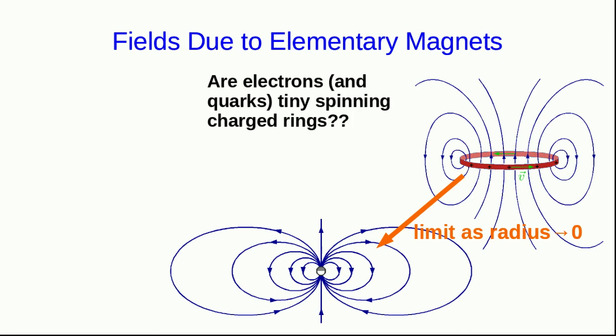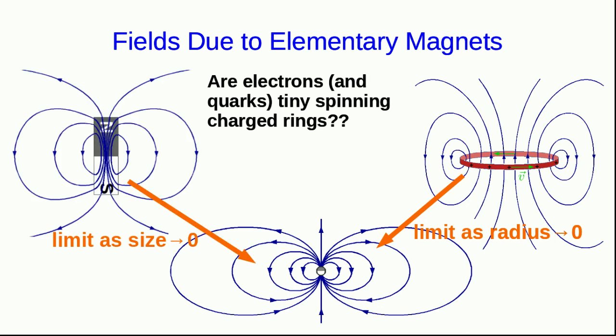So this raises a question. Are electrons and other elementary particles like quarks just tiny, spinning, charged rings? Well, in fact, if you work through the theory, you come to the conclusion that they can't be for a variety of reasons, mostly to do with that they would have to spin way too fast. So the other thing to realize is that if you take a bar magnet and let all its dimensions go to zero, you also get a dipole field just like an elementary magnet. And so you can think of an elementary magnet also as just like a bar magnet. However, this term spin has stuck around because for a while people really did think that elementary particles were spinning and that's what produced their magnetic fields. And so you've probably heard of the spin of an electron.